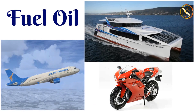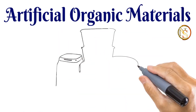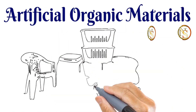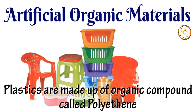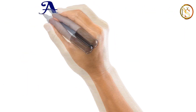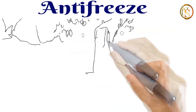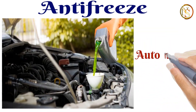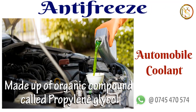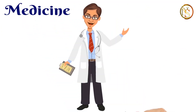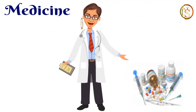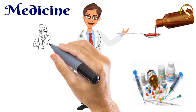There are also artificially synthesized organic compounds which are very useful in our daily life. For instance, plastics which are made up of polythene, one of the most common organic polymers in the plastic industry. Antifreeze, also known as automobile coolant, which also contains propylene glycol — it is considered to be less toxic and labeled as less toxic antifreeze. Medicines such as paracetamol, albendazole and aspirin. All these are man-made organic products.